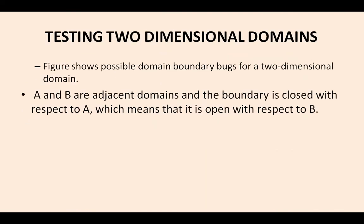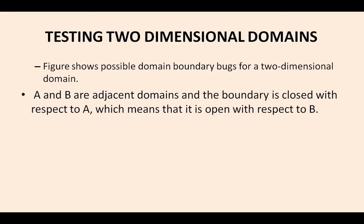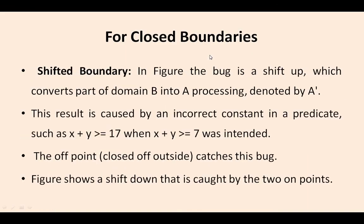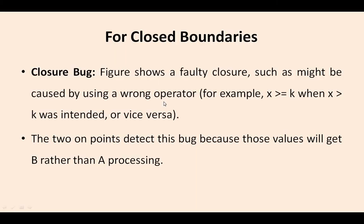Now we see how to test a two-dimensional domain. Up to now, we have completed the one-dimensional domain only. Now we are talking about the two-dimensional domain. A and B are adjacent domains and the boundary is closed with respect to A, which means it is open with respect to B. In the two-dimensional domains, we have closure bugs, shifted down, tilted boundary, etc. Not only one single boundary will be there — the overlapping and intercepting of one boundary with another, conjoining of one boundary with another — all are examples of testing two-dimensional domains.